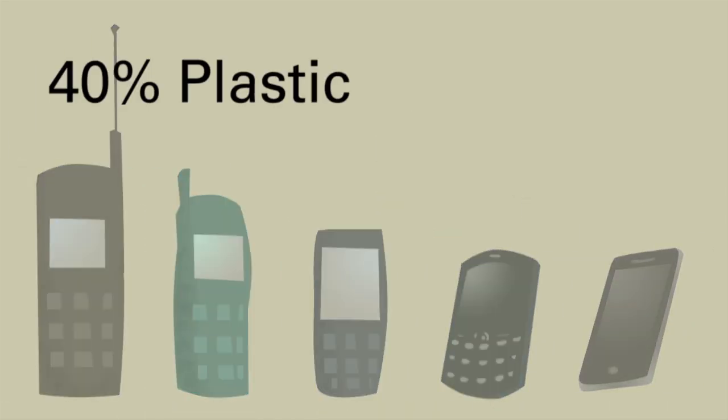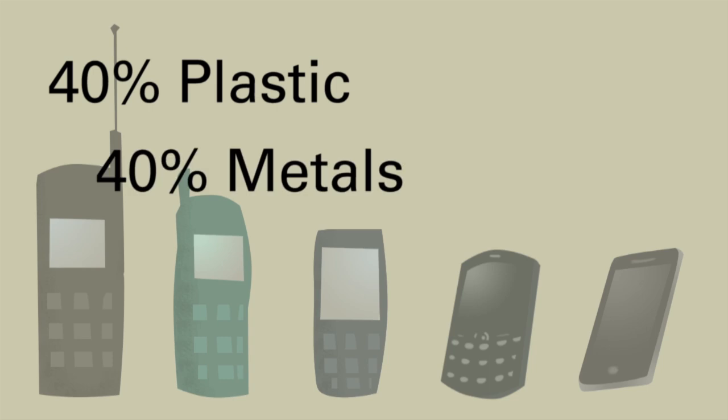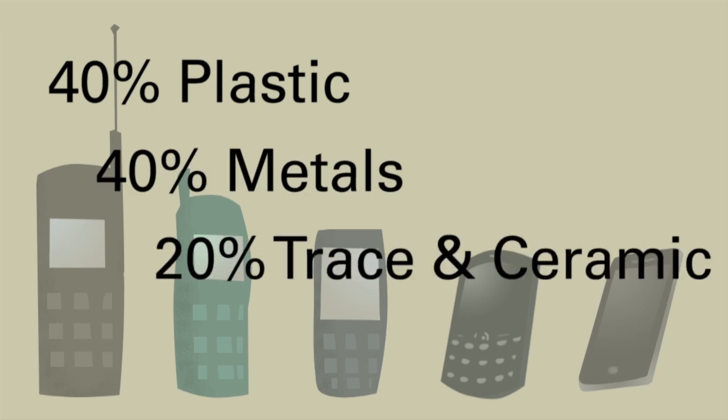Mobile phones are made of 40% plastic, 40% metals, and 20% trace and ceramic materials.